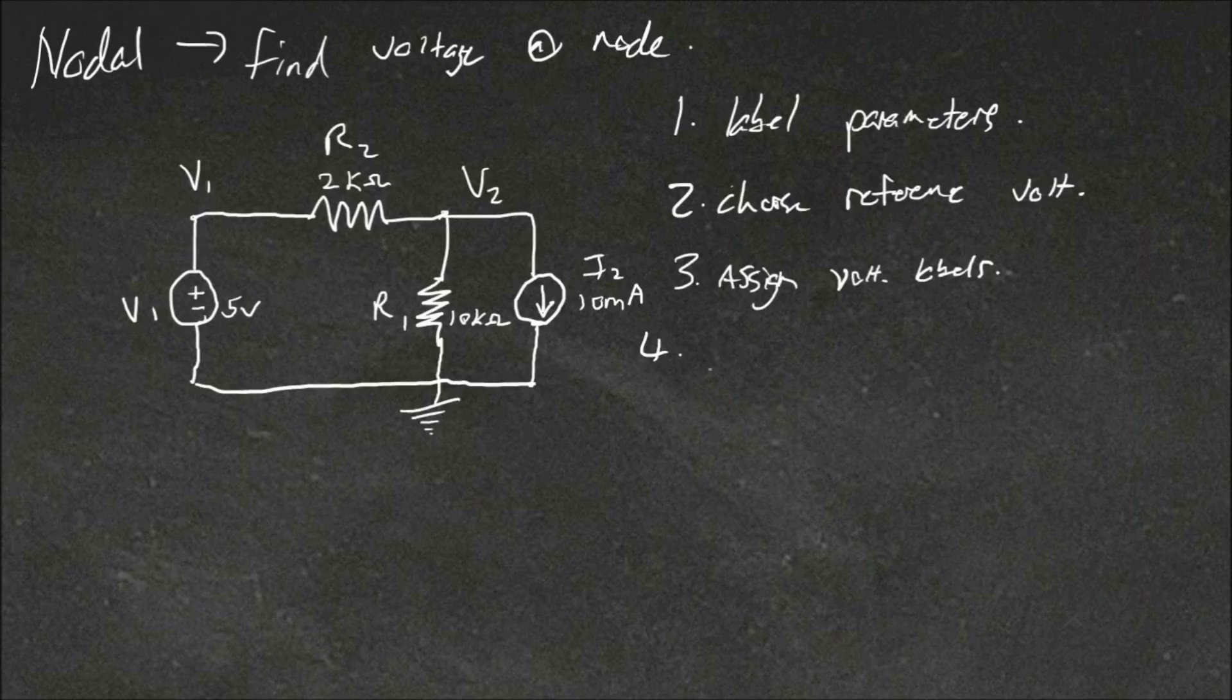Step 4 is to identify our unknown voltages. So in our case this is only V2. We already know that V1 would be equal to the voltage source here, so V1 is known, V2 is unknown.